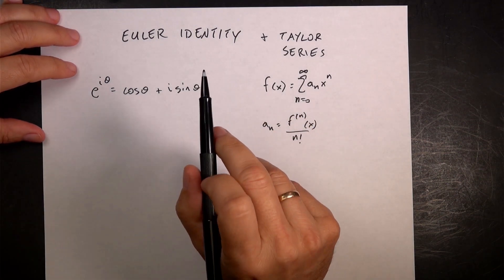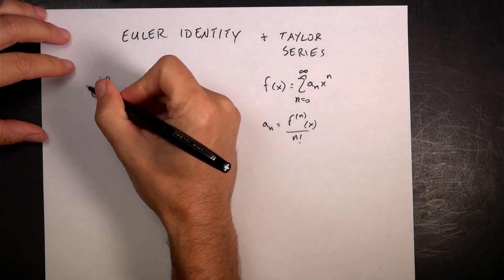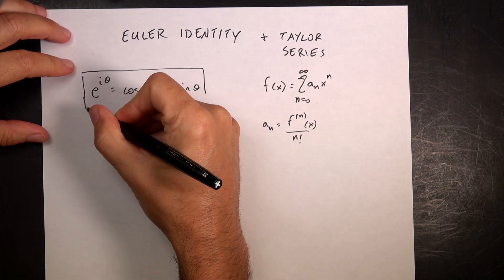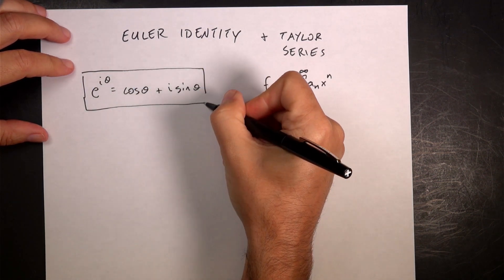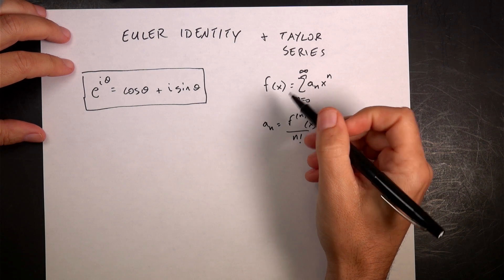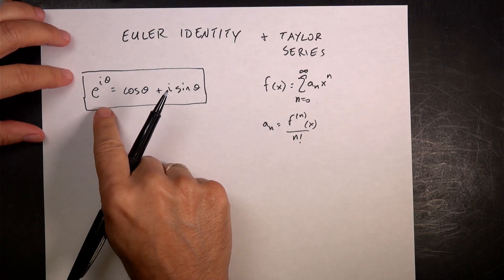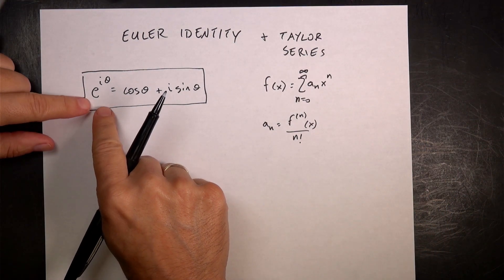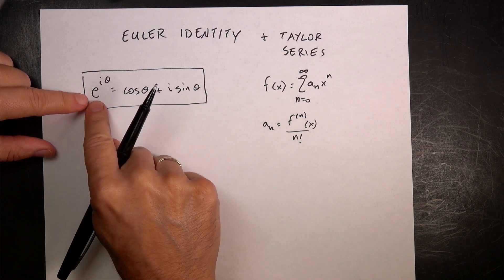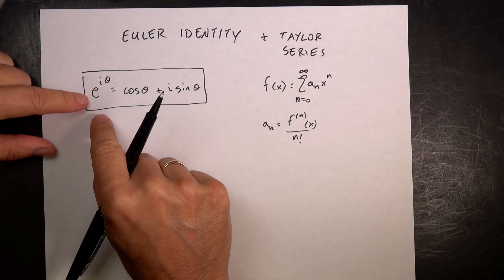I'm going to show you a cool trick with the Euler identity, which is this very weird equation, and the Taylor series, also kind of a weird equation. The Euler identity gives a relationship between an exponential and trig functions, and imaginary numbers, surprisingly.